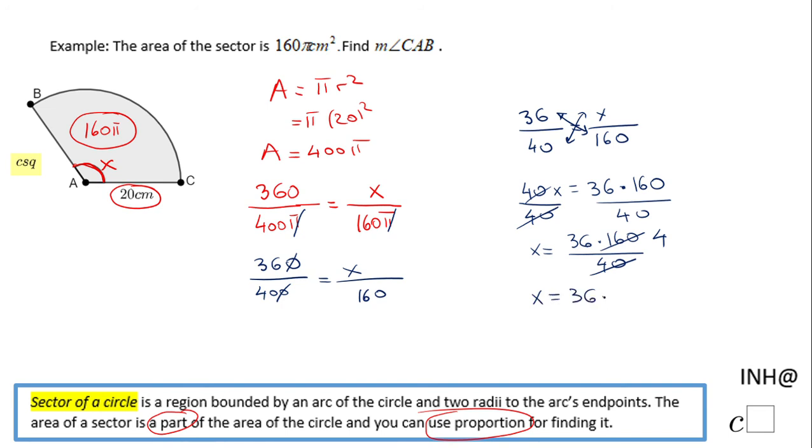You know if you notice here 40 goes evenly in 160 four times, so I have 36 times 4 which is going to be 144. Remember this x stands for the measure of the angle, so the measure of angle CAB, the central angle of this sector, is 144 degrees.